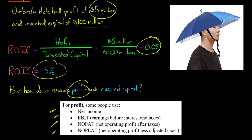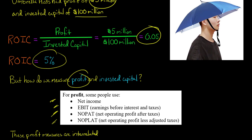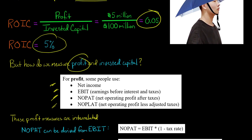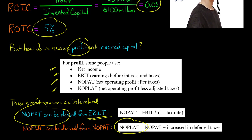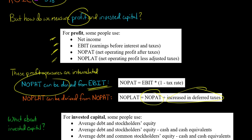These measures are interrelated. For example, NOPAT can be calculated from EBIT: if you take a company's earnings before interest and taxes and multiply it by one minus the tax rate, you get the company's NOPAT. And NOPLAT — net operating profit less adjusted taxes — is just the company's NOPAT plus the increase in deferred taxes.